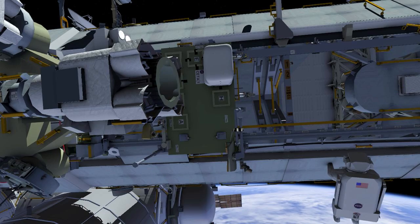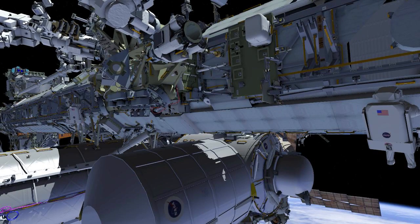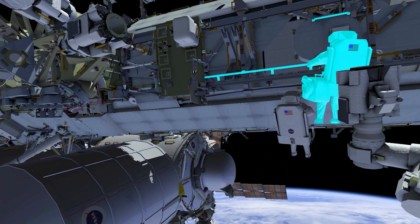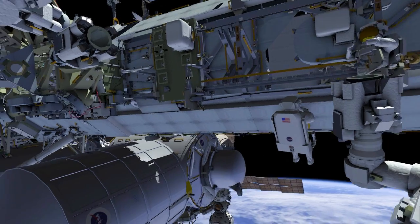EV2 stows the tool bag while EV1 follows the same path. EV1 retrieves a portable foot restraint and installs it in the robotic arm.